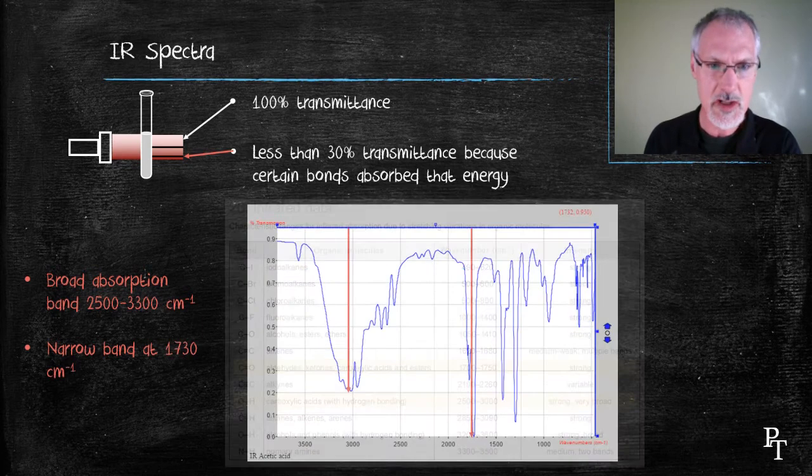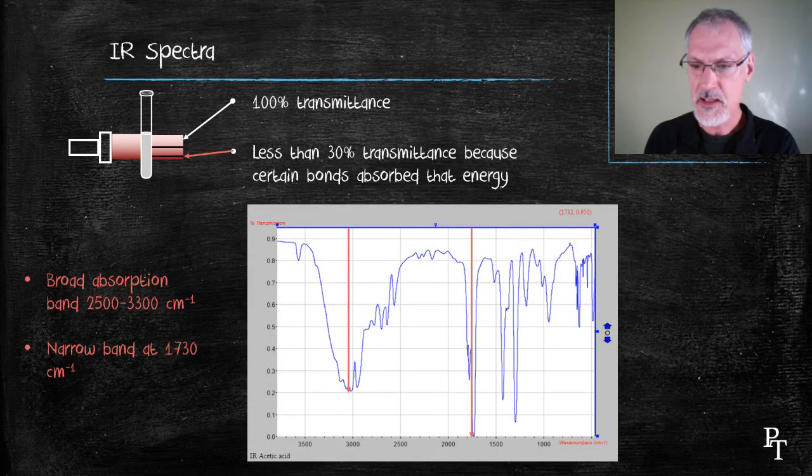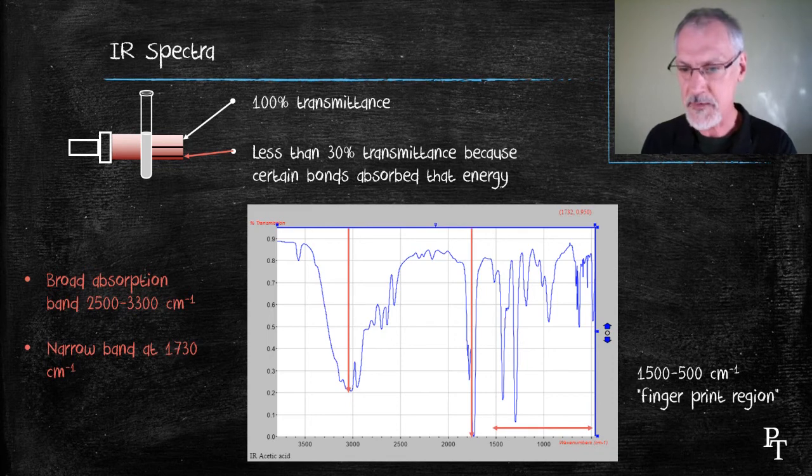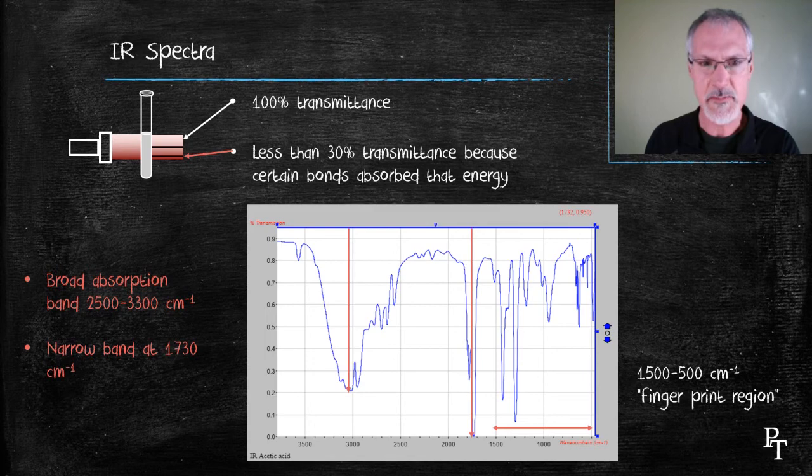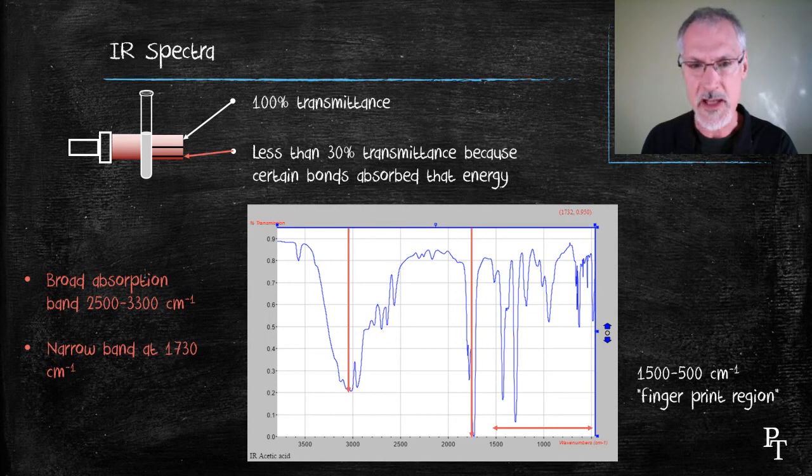To further justify which carboxylic acid it might be, I take a look at what's called the fingerprint range, which ranges from about 1,500 down to about 500. That particular part of the spectrum is characteristic for each molecule. And by consulting a library, I might be able to determine which one it actually is.